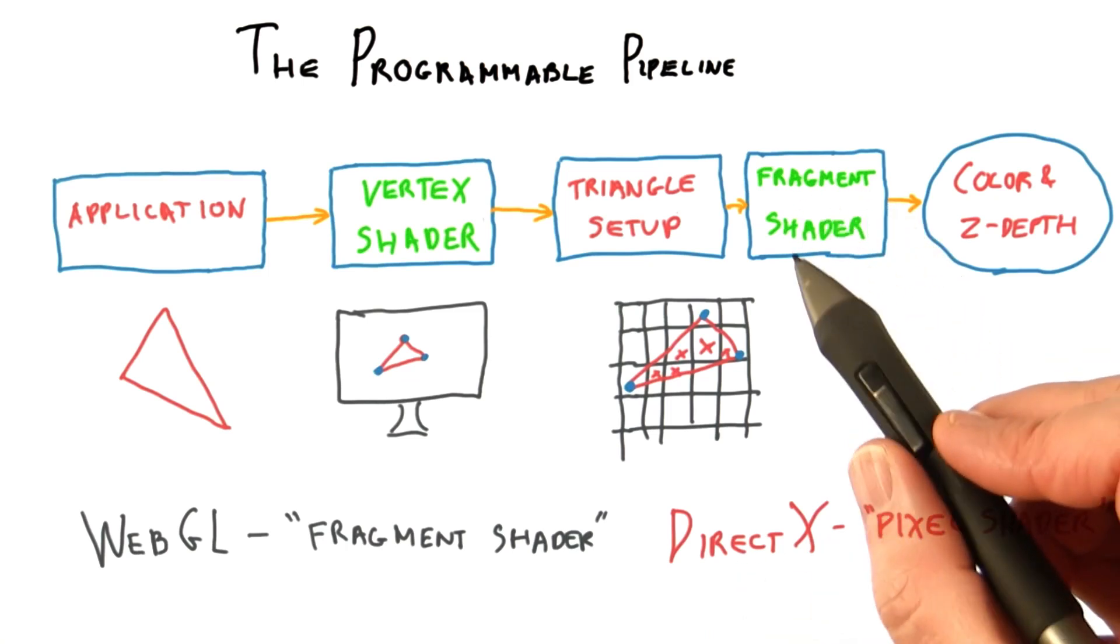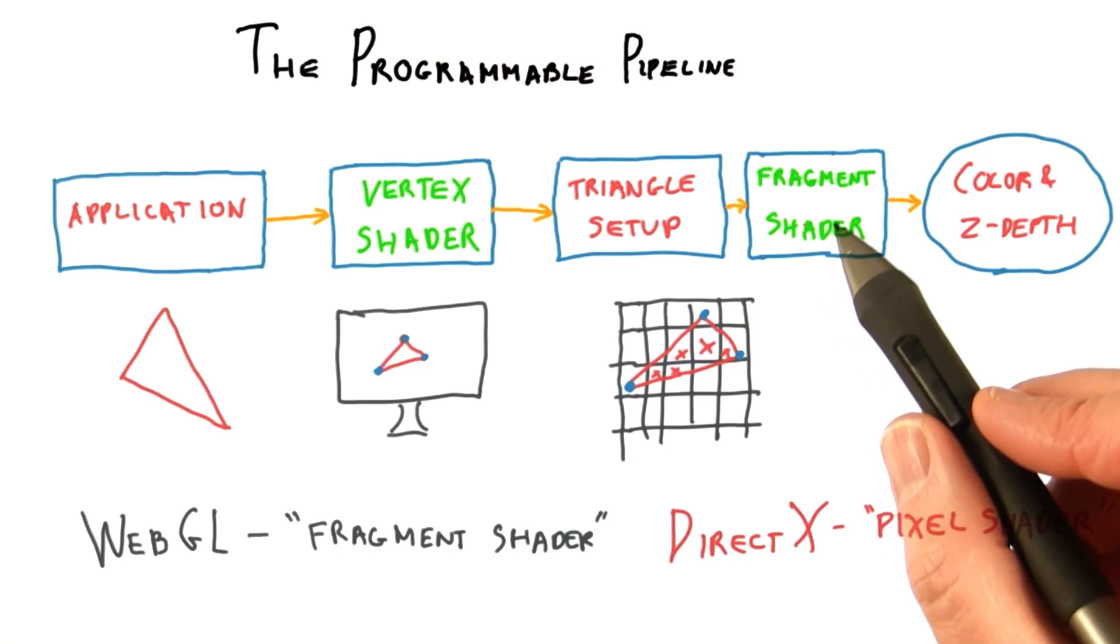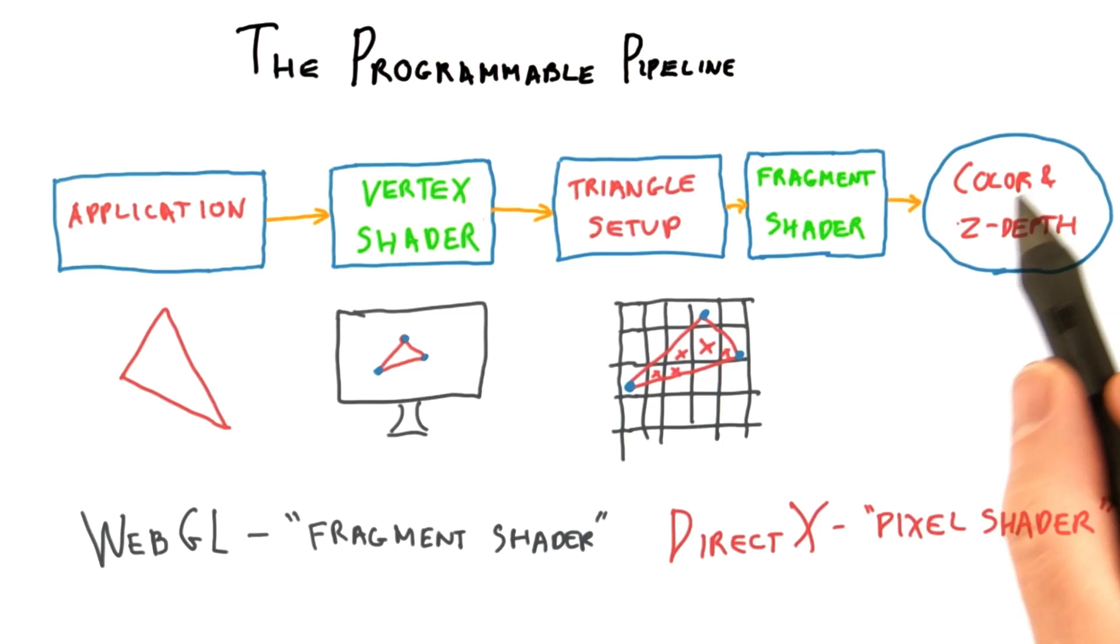The fragment shader is provided information by the triangle being processed. Similar to the vertex shader, the programmer can also feed in any other data desired. The fragment shader runs a program that typically outputs a color and a z-depth value. This z-depth value is then tested against the z-buffer as usual. If the surface is visible, the color is saved for that pixel.